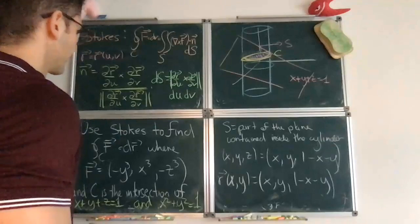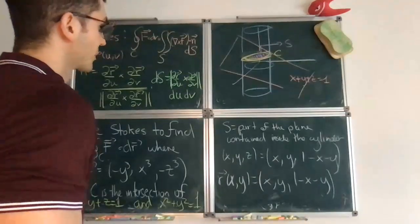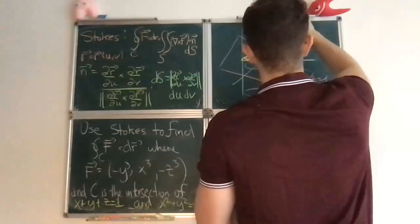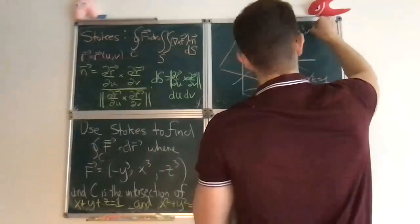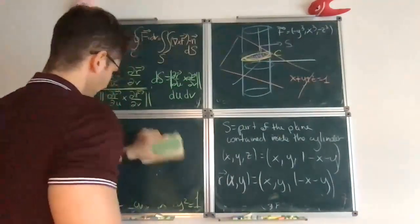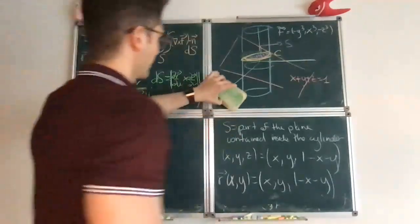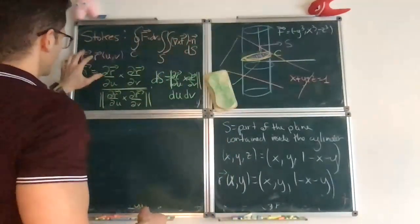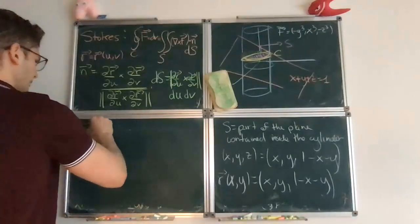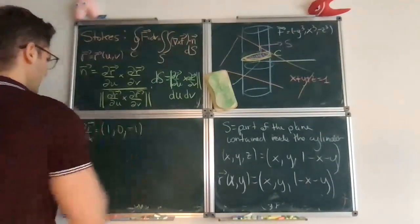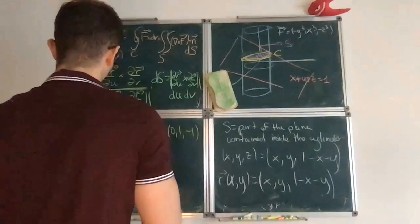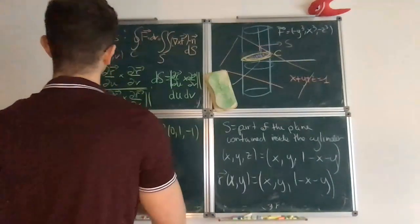And now, let's see. Let me write here the vector field. Once you have the parameterization, we go by steps. Take the partial derivatives with respect to x and y of that. This is way easier than the previous case. This is just 1, 0, negative 1. And with respect to y, it gives you 0, 1, negative 1.